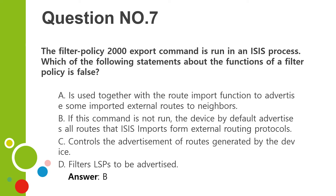Question number seven. The filter-policy export command is run in an ISIS process. Which of the following statements about the functions of a filter policy is false? A. Is used together with the import function to advertise some imported external routes to neighbors. B. If this command is not run, the device by default advertises all routes that ISIS imports from external routing protocols. C. Controls the advertisement of routes generated by the device. D. Filters LSPs to be advertised. Answer: B.